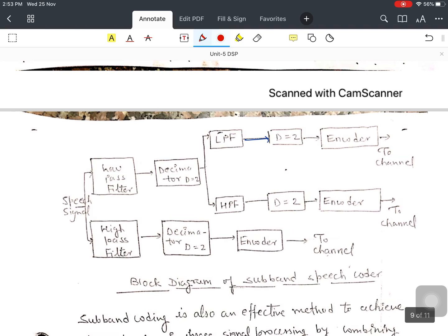You can see over here the subband speech coder. We have low pass and high pass filters, and the speech signal is going to both of them. Then decimation by 2 for both LPF and HPF, then encoder, then to the channel. This is one of the examples for subband speech coder.